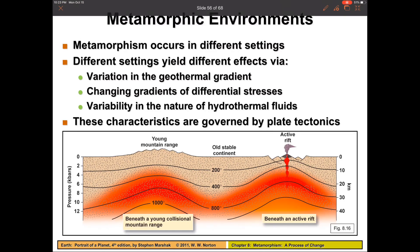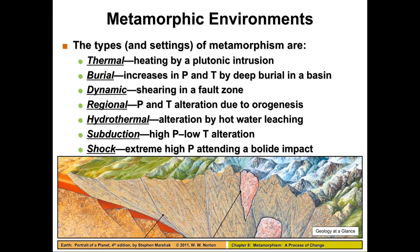We can summarize everything and look at the different metamorphic environments in which metamorphism happens. There are quite a few environments, and we're going to take a look at each one and the effects that they have on the rocks. Pay attention to whether the rock is going to be foliated or non-foliated as a result.